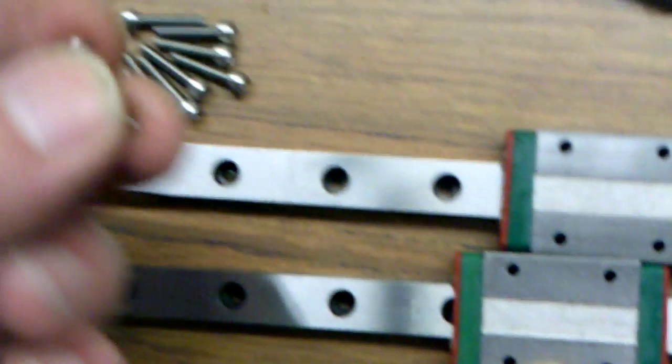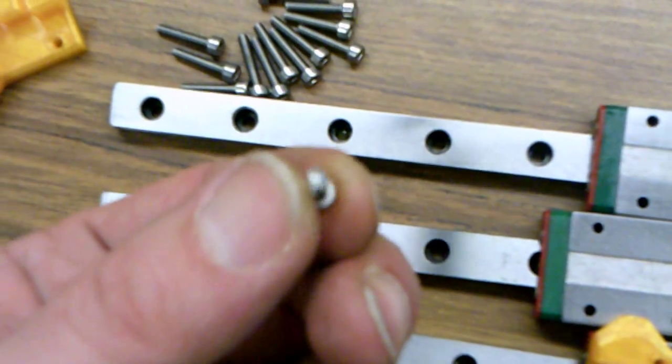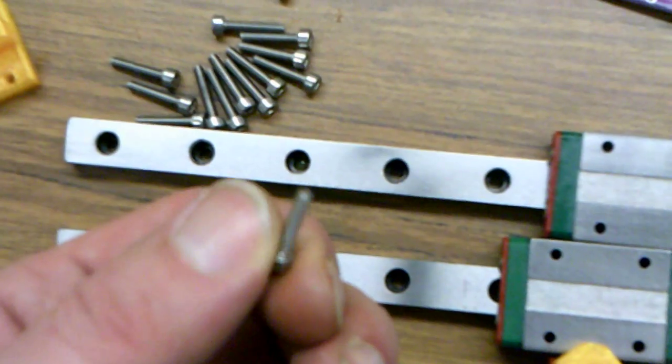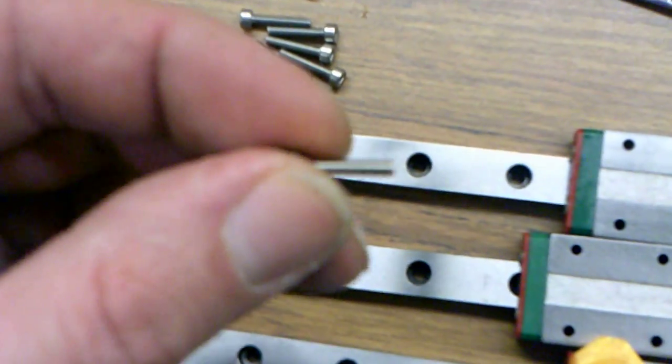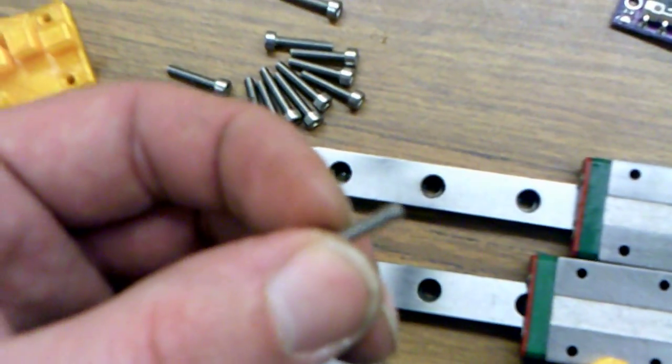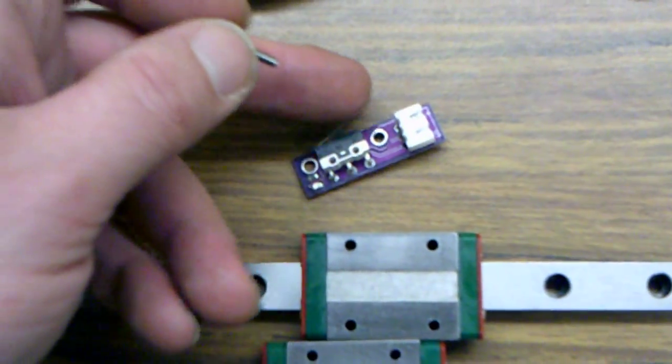And then to attach your end stops, you're going to be using a much thinner bolt, this is an M2.5. And it's got to be long enough that you can go all the way through your switch to the holder.